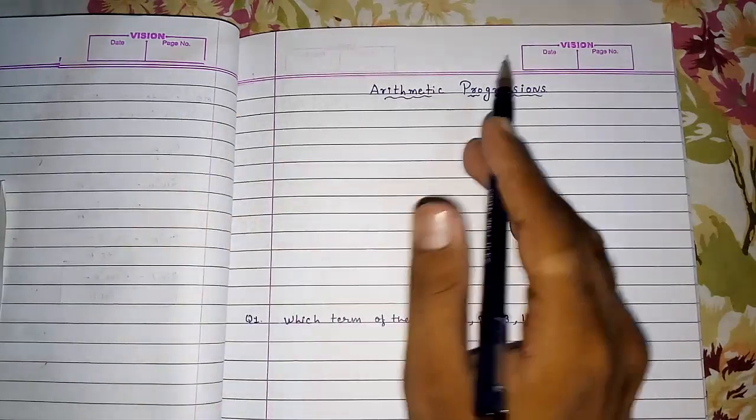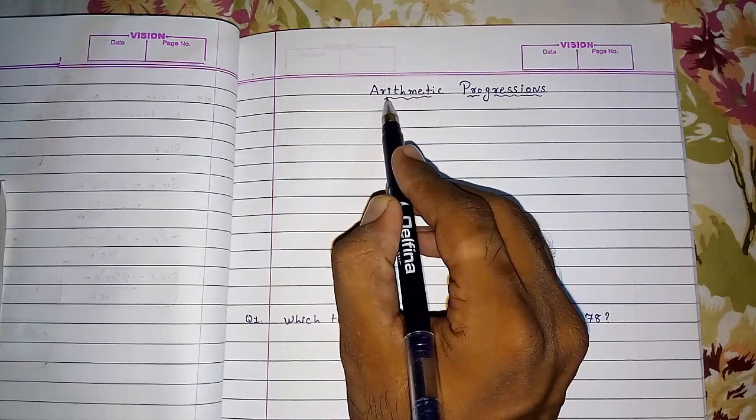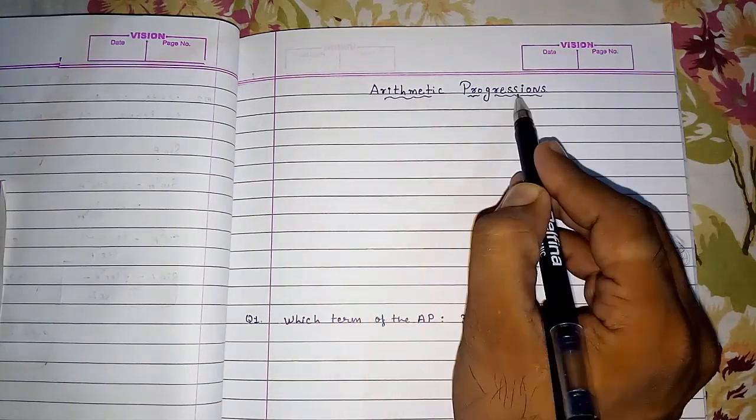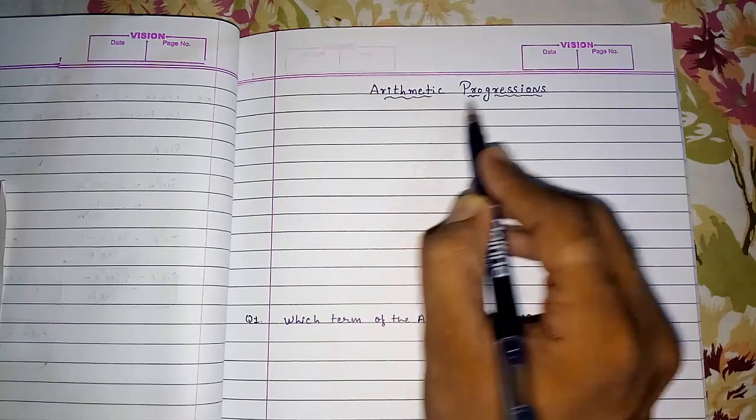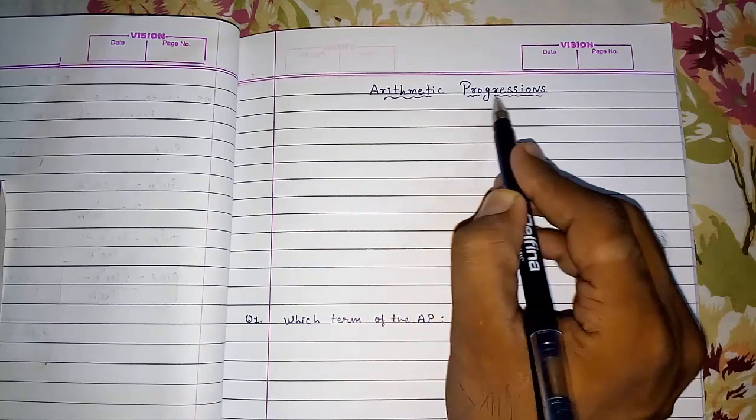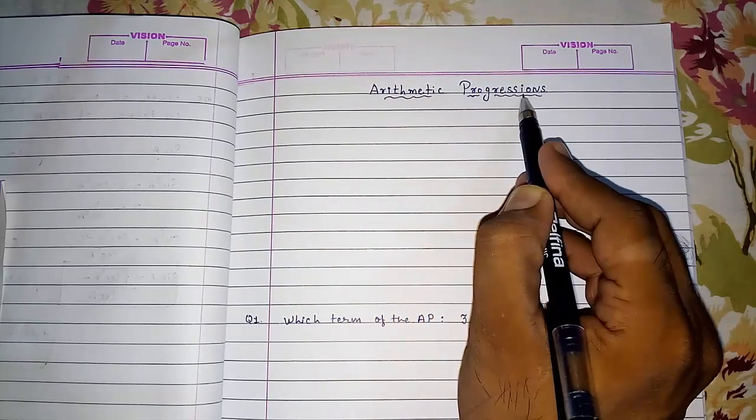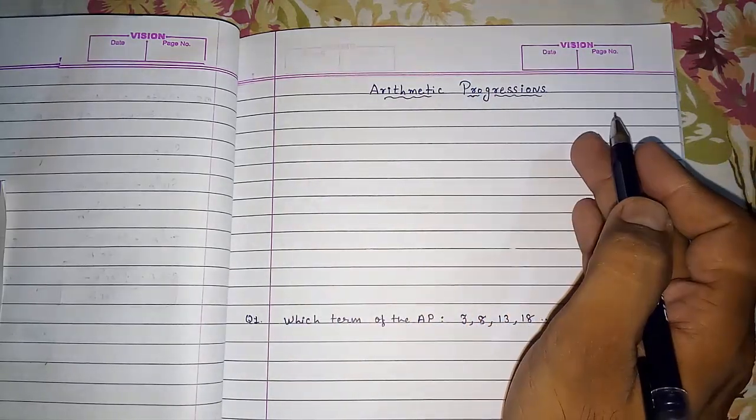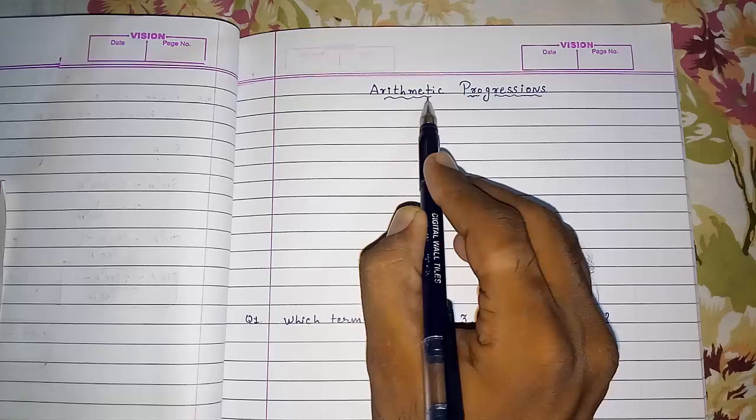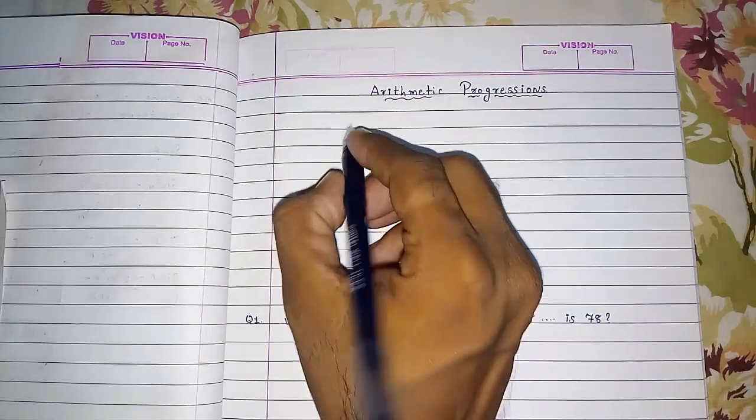So what is an AP? AP means arithmetic progression, or you can say the short form of arithmetic progression is AP. First I would like to tell you progression means progress. So any number is having the same progress, then that is called arithmetic progression. I am giving you an example.